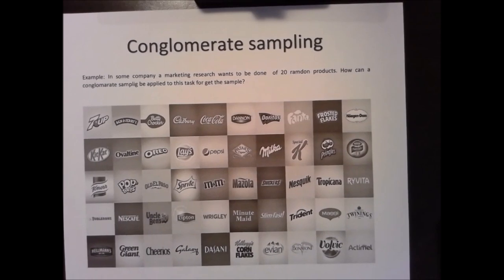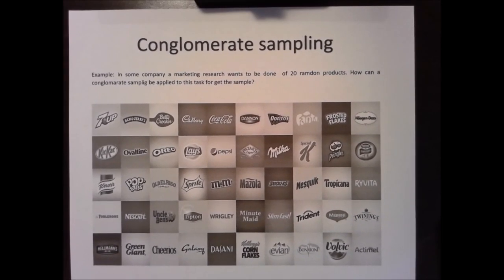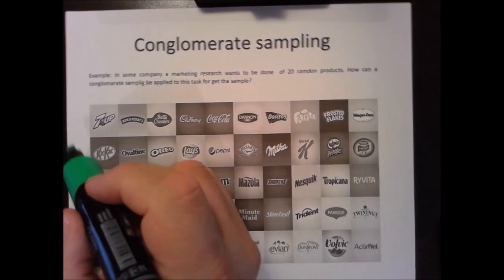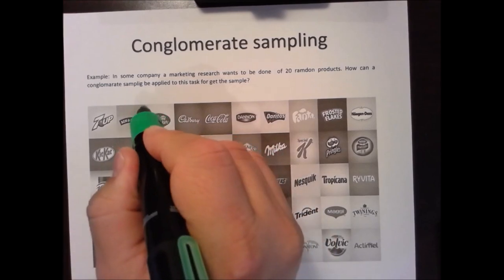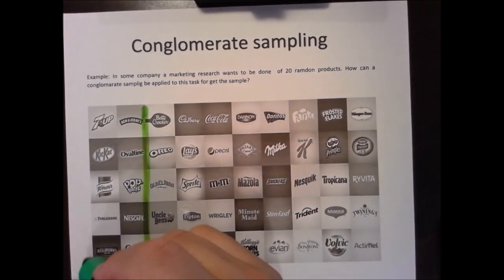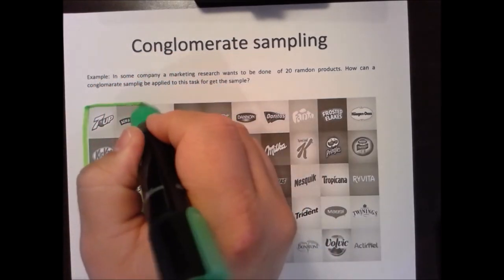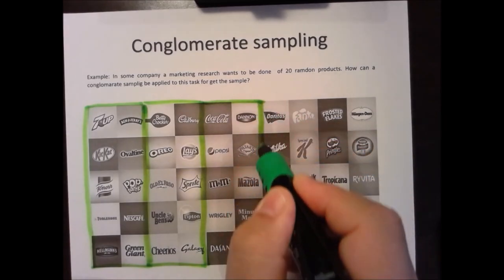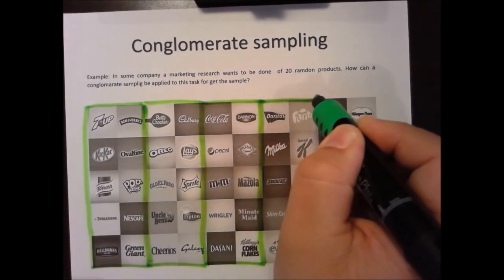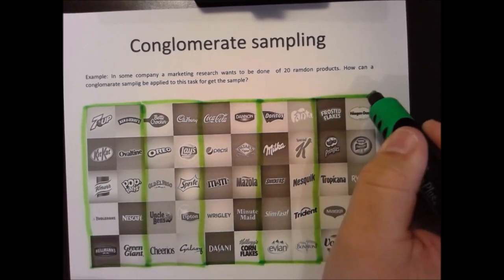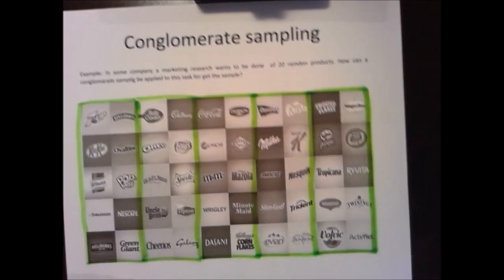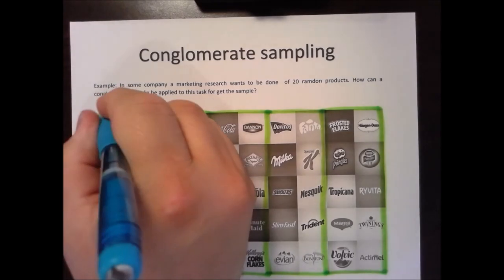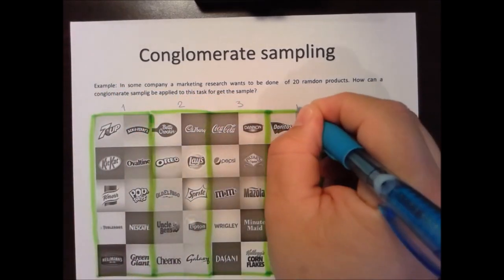In this case, I'm going to make 5 groups of 10. That means at the end I'm going to select 2 groups, and each group has 10 products. So we label the groups: group 1, group 2, group 3, group 4, and group 5.